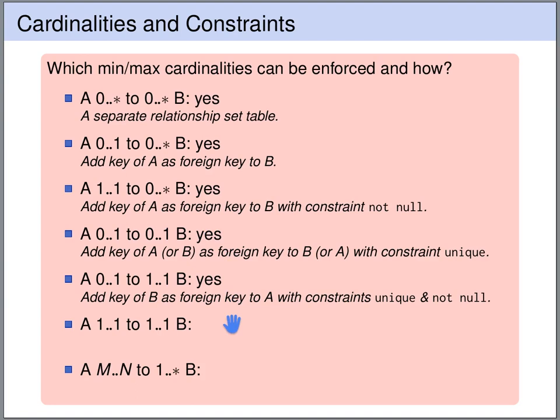If we want to model a precisely-1-to-precisely-1 relation, then we can simply join the two tables. Since every A belongs to precisely 1 B, we can put the two tables together and place the entities that belong together in the same row.